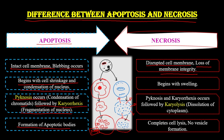During necrosis, it begins with swelling of the cell because it cannot maintain integrity, followed by pyknosis, karyorhexis, and karyolysis — dissolution of the cytoplasm — and ultimately a complete lysis of the cell with no apoptotic bodies formed. This releases the complete cellular content, causing a huge inflammatory reaction, attracting many types of immune cells which secrete inflammatory molecules, resulting in more damage in the vicinity where necrosis occurs.